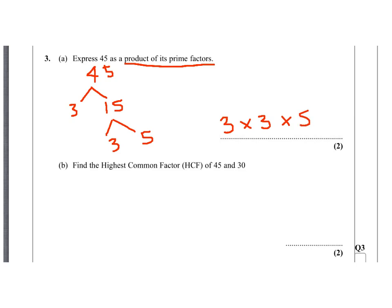Now we need to find the highest common factor of 45 and 30. We can write 30 as 6 times 5, and 6 is 2 times 3. So 2, 3, and 5 are prime factors of 30.